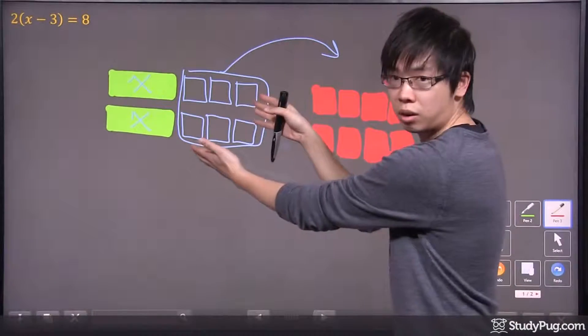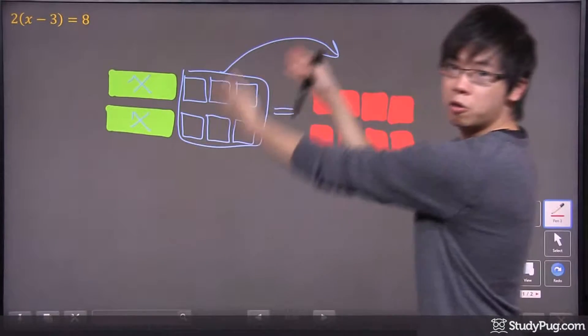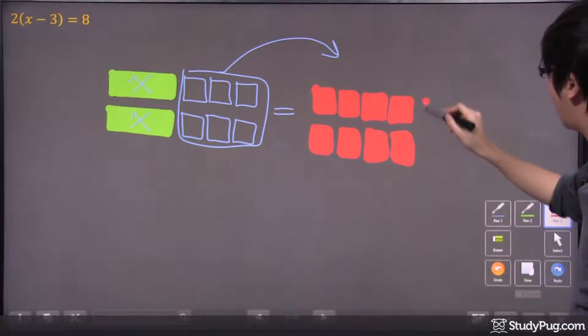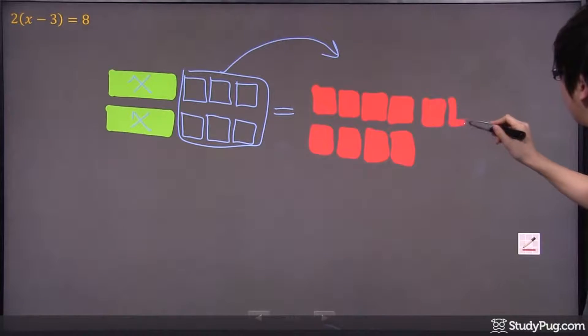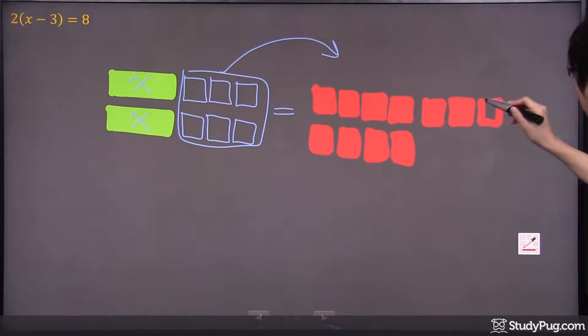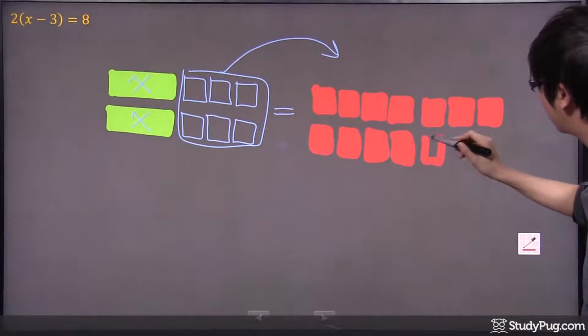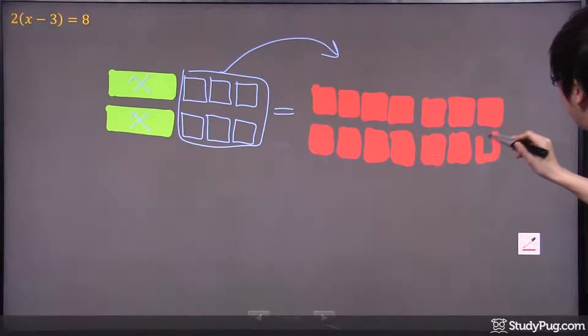So, pretend that you take these guys right here, that were negative six. You bring it over, they become positive six. So, I'm going to add one and two and three and four and five and six.